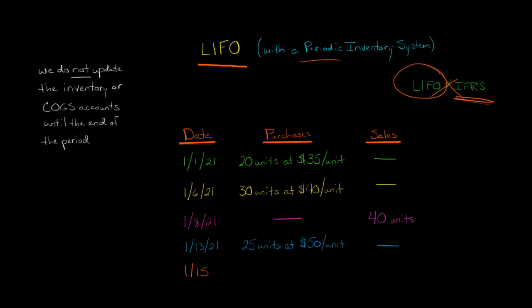There's no other transactions. And then we have the period end. We have to go and calculate cost of goods sold and ending inventory. So at this point in time, we say, what is the most recent purchases? Those are going to be the ones that go to cost of goods sold first.